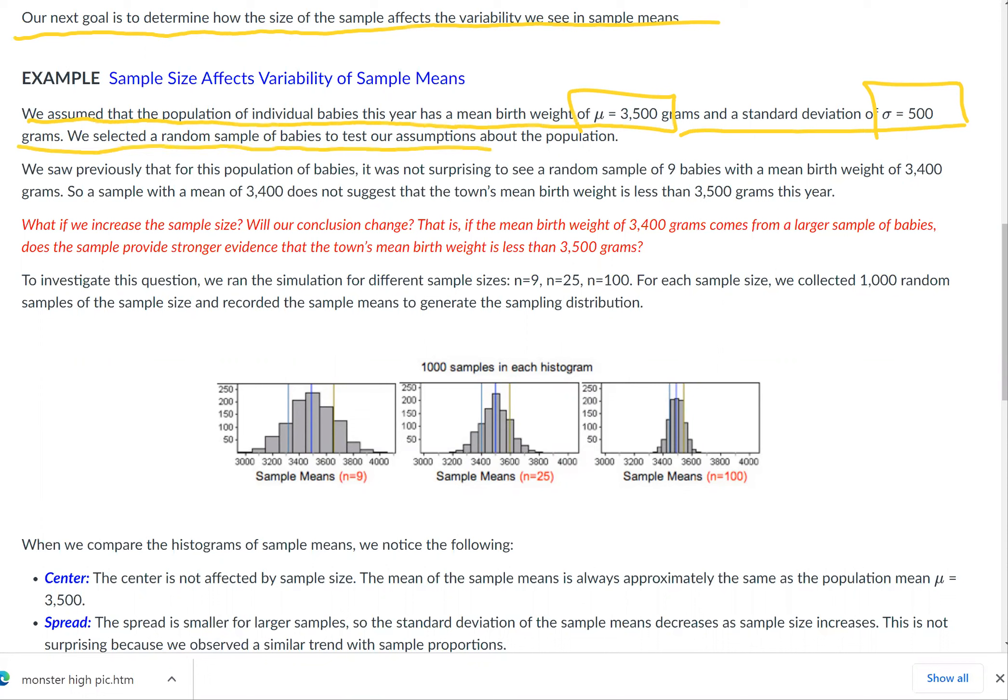We selected a random sample of babies to test our assumption about the population. We saw previously that for this population of babies, it was not surprising to see a random sample of nine babies with a mean birth weight of 3,400 grams.